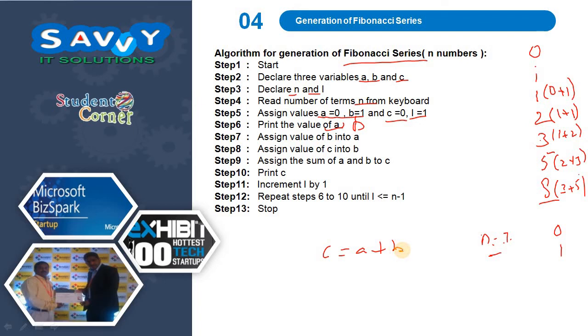It means that the new value will be, I said 0 plus 1, which is 1. We need to print c. Now what I am doing is, value of b is assigned to a, so a equals b and value of c is assigned to b. These steps are repeated until i reaches n minus 1.